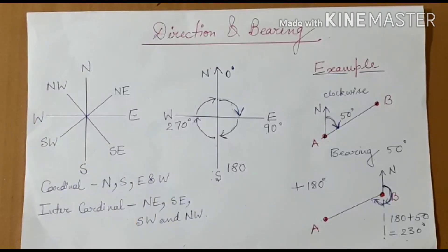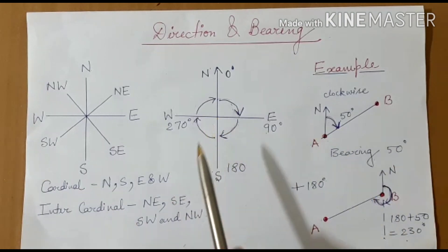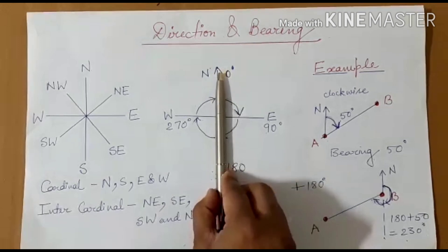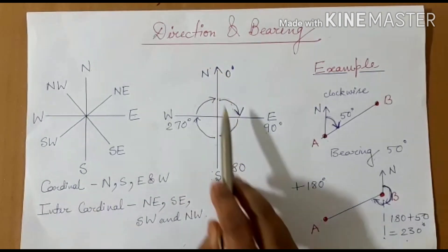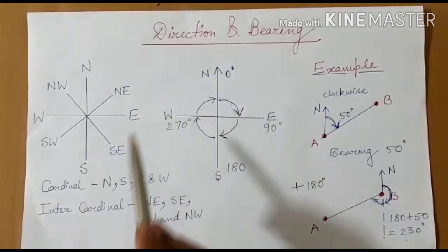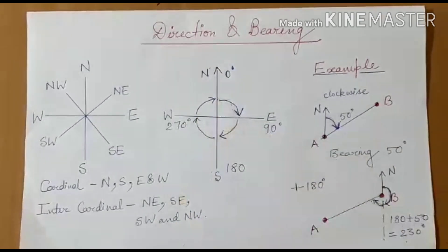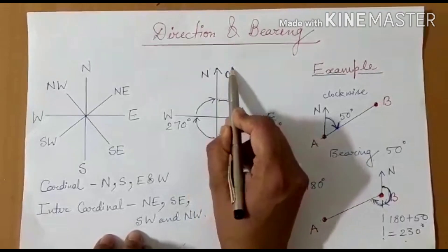Now we will learn about bearing. Bearing is the exact angle of one station from another, or of one point from another, and it is always calculated by following the north line. Here is the north line with all directions marked — north, south, east, and west. Every part of the bearing has 90 degrees, making 360 degrees altogether. North is considered 0 degrees.